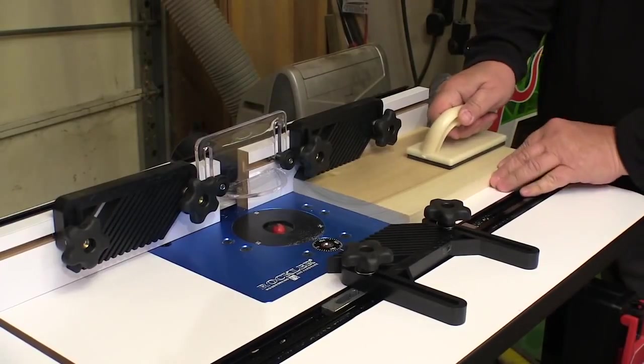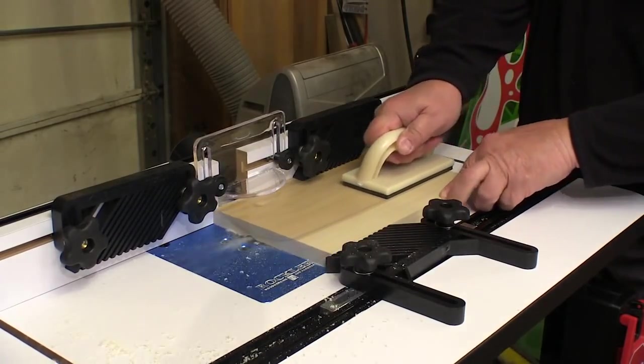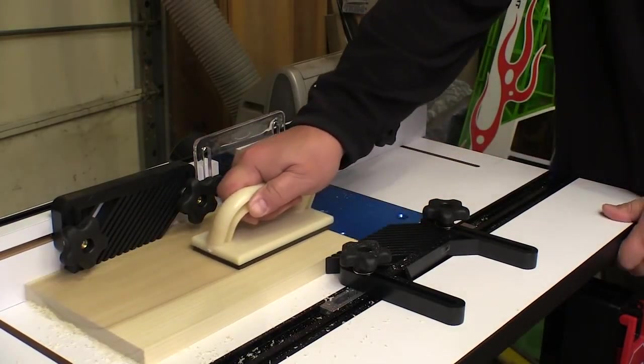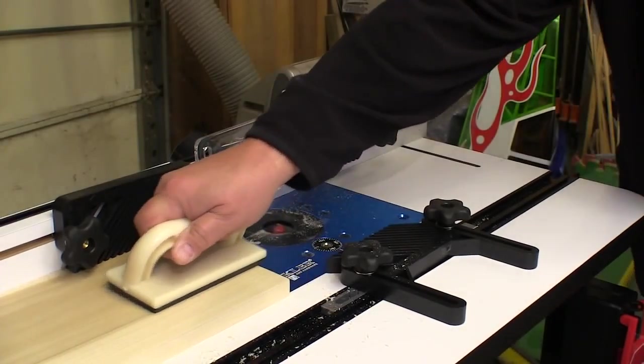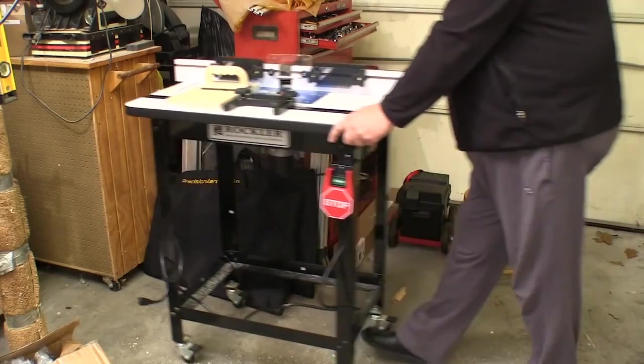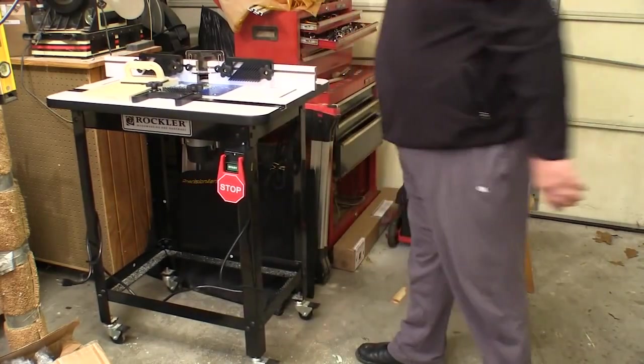So if you're looking to add a router table to your shop you need to look at the offerings that Rockler has. They have several different packages available to get the one that fits your shop the best. And remember the casters because when you get done routing you're going to need that room for something else.